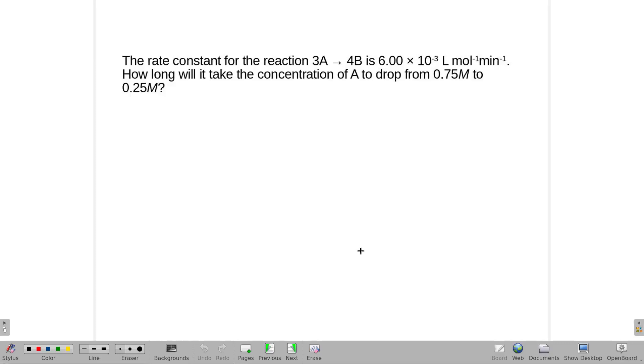The rate constant for the reaction of 3A going to B is 6 times 10 to the negative third liter per mole per minute. How long will it take for the concentration of A to drop from 0.75 to 0.25?